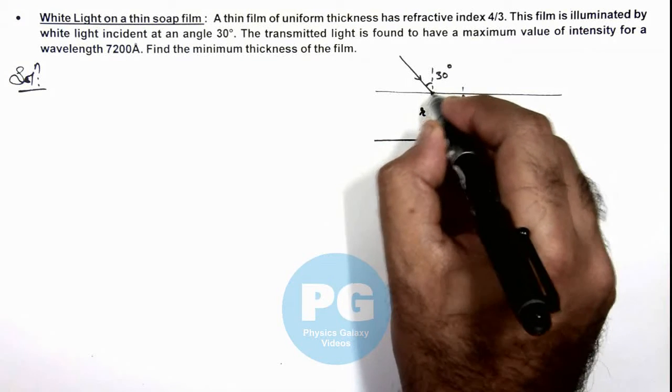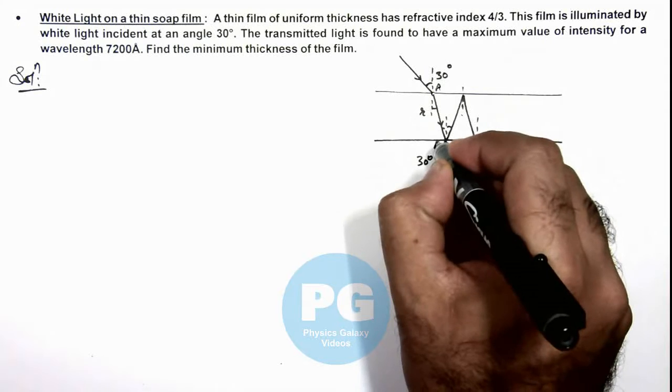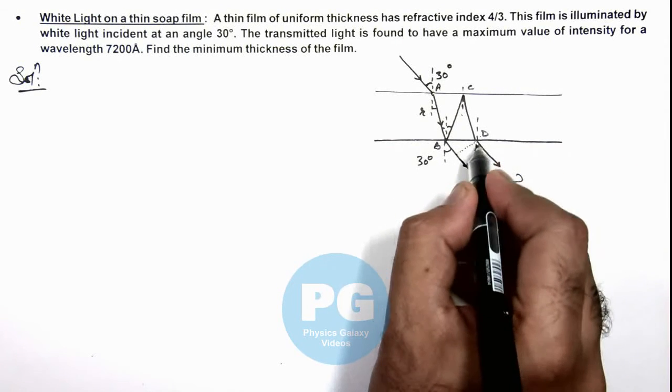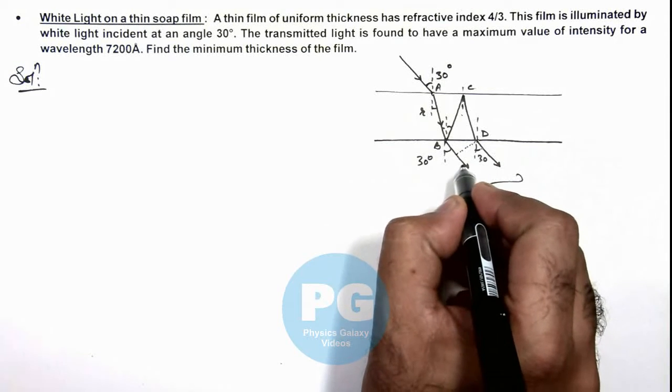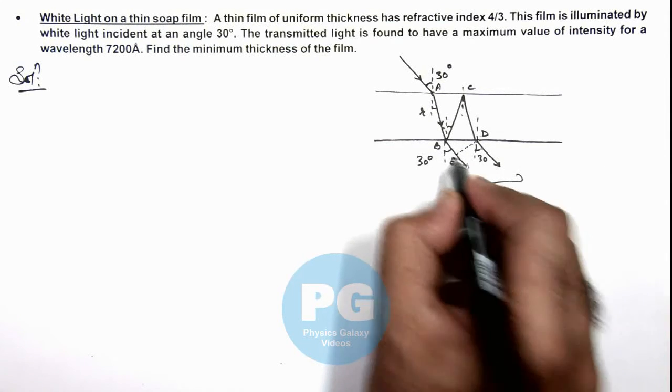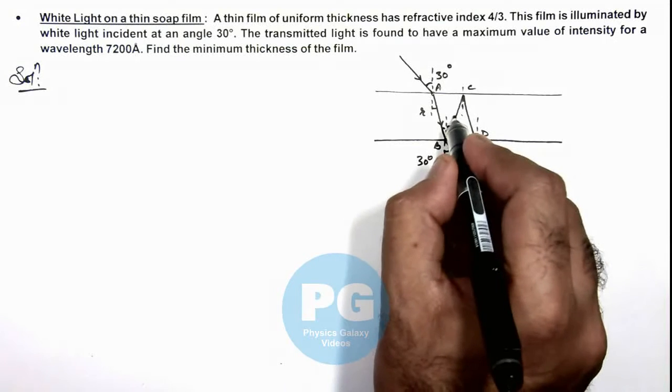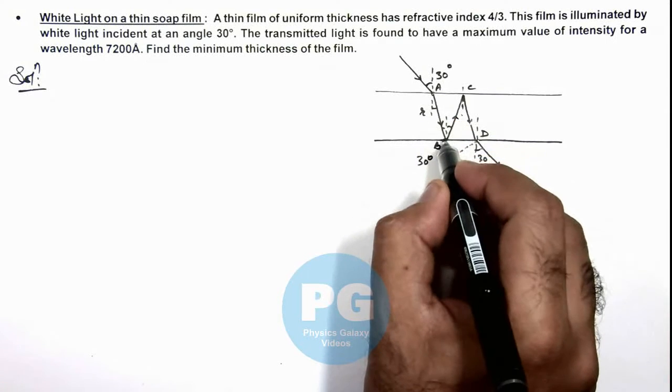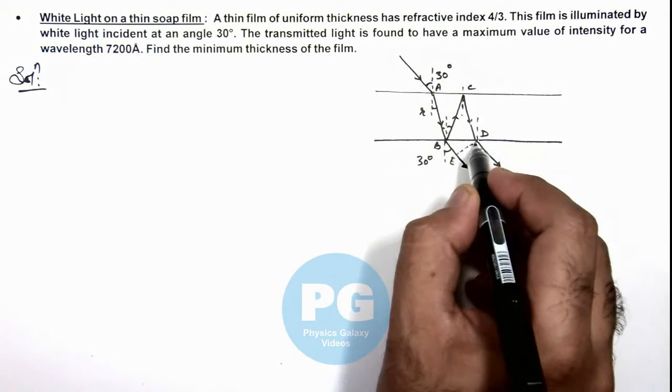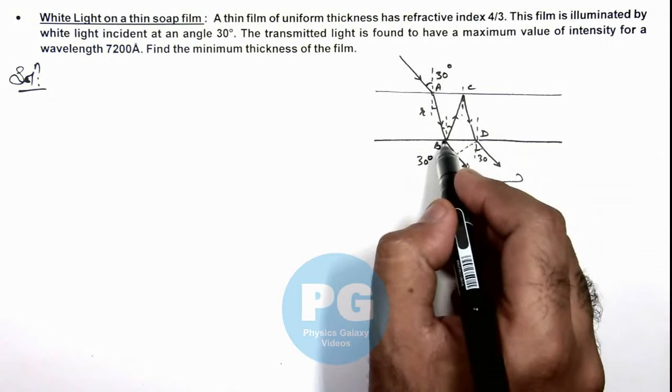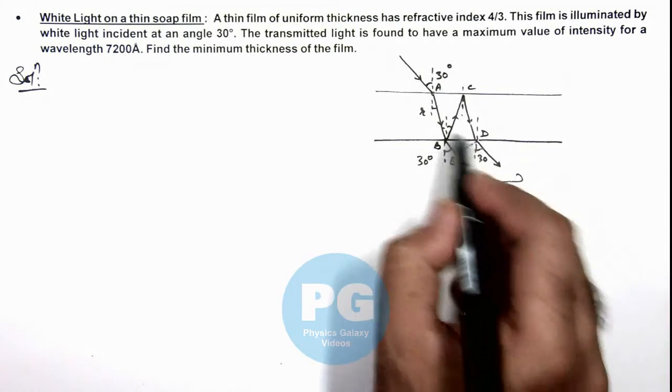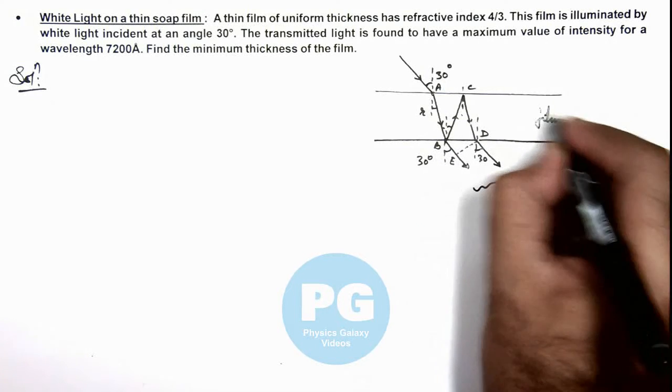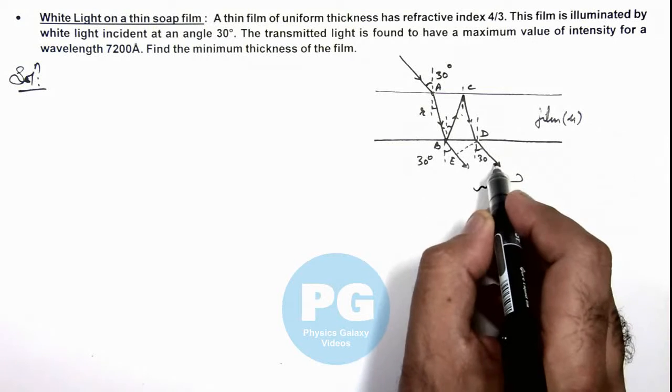So if we mark this point as A, this as B, this as C, this as D, and we drop a perpendicular from this point D to the final emerging ray, and say this is E. So if we calculate the path difference for these two light beams then we can see the path AB is travelled by both the beams, so we ignore it. For the first beam it is coming out from this point and the second beam travels a path BCD in this film which is having a refractive index mu, and finally it comes out at D.